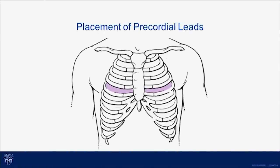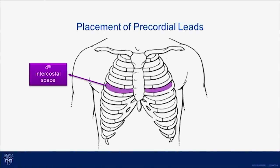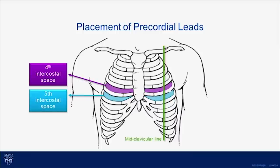Placement of the precordial leads. The fourth intercostal space is where we start placing the leads. There's also the fifth intercostal space that we'll talk about, as well as the mid-clavicular line and the mid-axillary line.